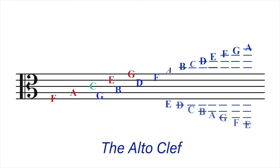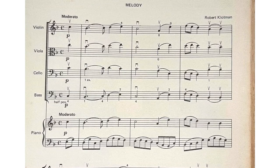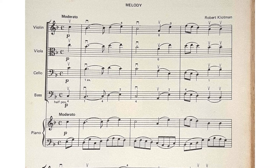Only one orchestral instrument — the viola, which is a member of the string family — uses the alto clef. In the piece of music shown, the violin plays on the first staff with the treble clef. The viola is next on the second staff, and you can see that it is the alto clef that appears there. The cello and contrabass play with the bass staff, while the piano plays on the great staff with the treble clef and bass clef combined.